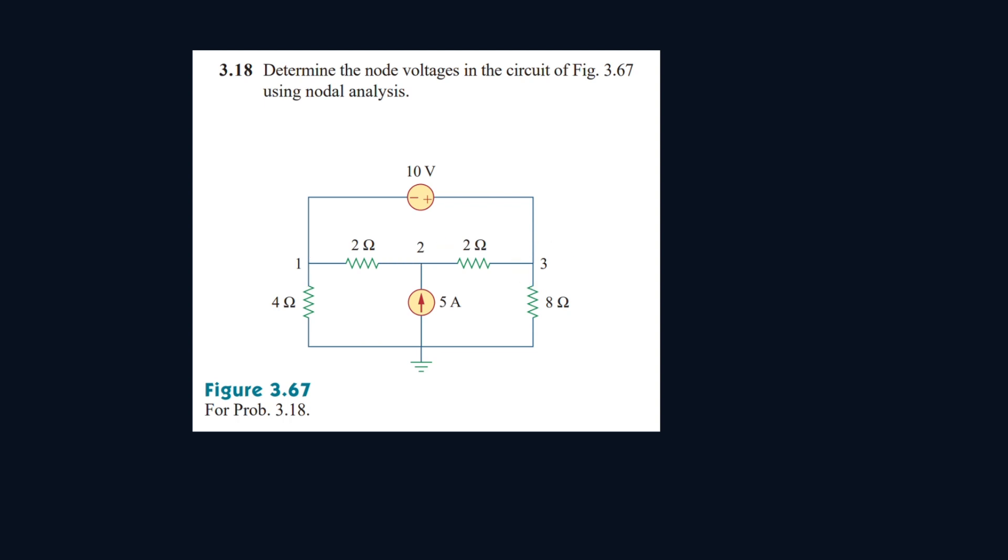The problem with this circuit is this 10 volt here, because if we have a current moving in this direction, it's going to be difficult for us to figure out what its value is. So what we're going to do is find an equation to represent this. We know if a current is moving in this direction, let's say this is voltage 1 and this is voltage 3.